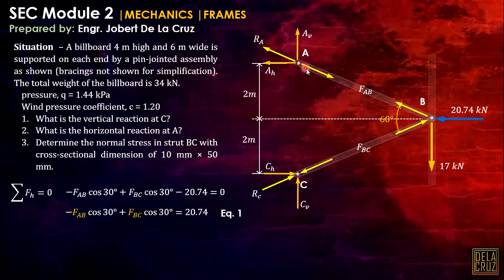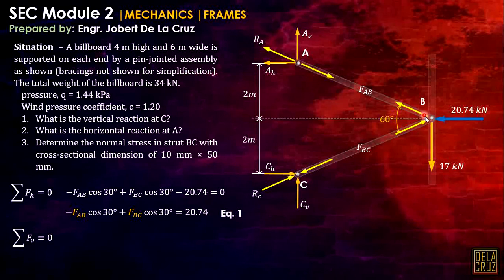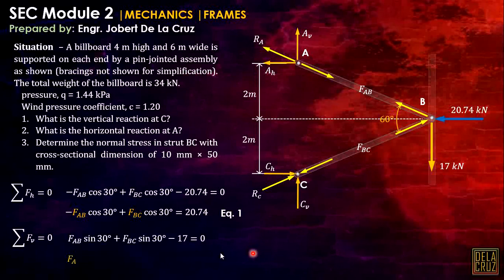For Equation 2, summation of forces vertical equals zero: FAB sine 30° plus FBC sine 30° minus 17 equals zero. Rearranging gives Equation 2. Using a calculator, we can solve these two equations simultaneously. Note that the force going toward the joint at C indicates it is a compression member.